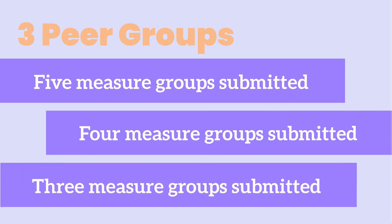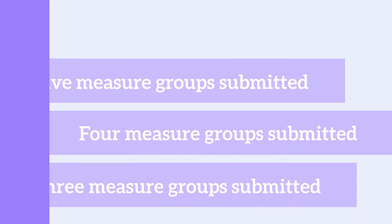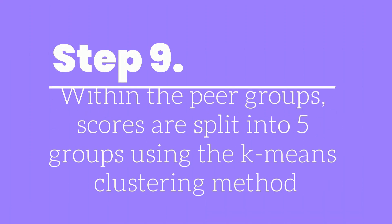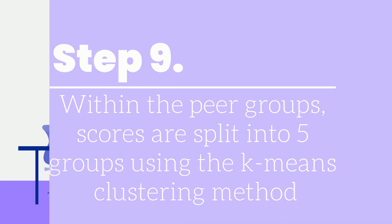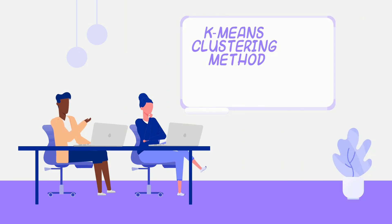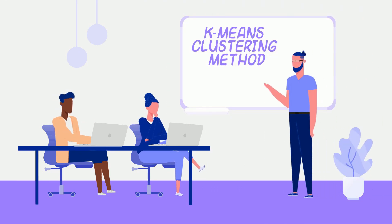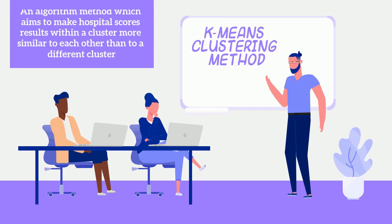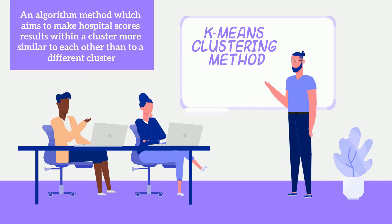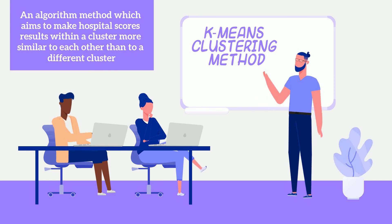Step 9: within the peer groups, scores are split into five groups using the k-means clustering method. Essentially, k-means clustering is an algorithm method which aims to make hospital score results within a cluster more similar to each other than to a different cluster.